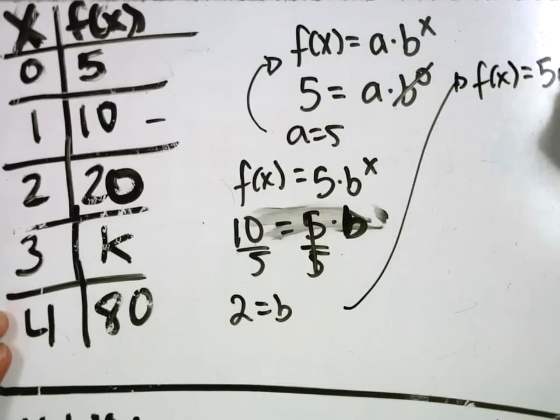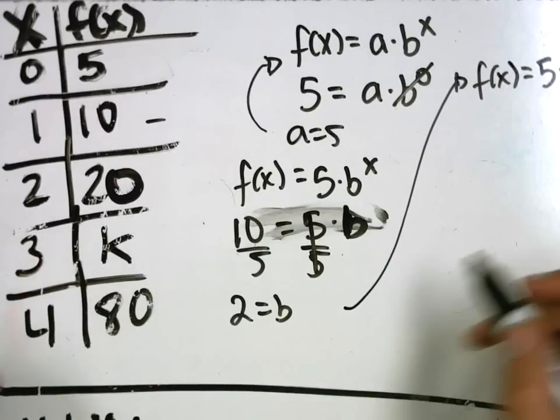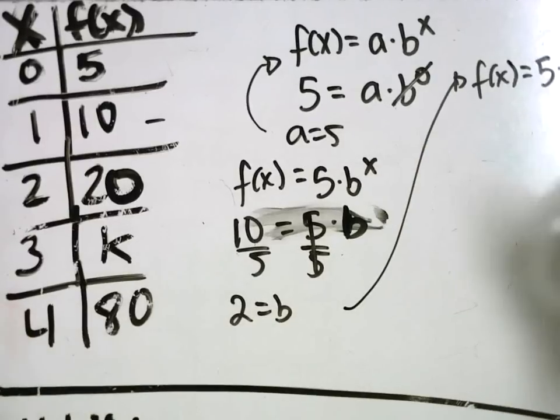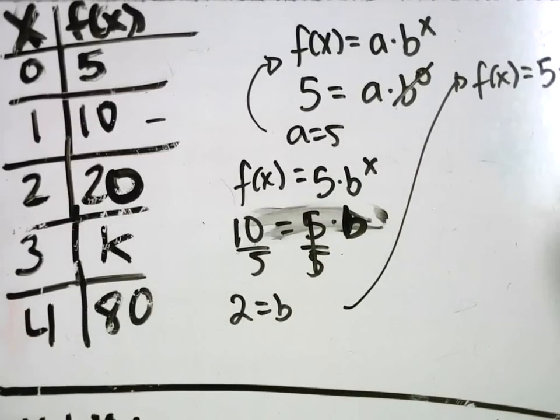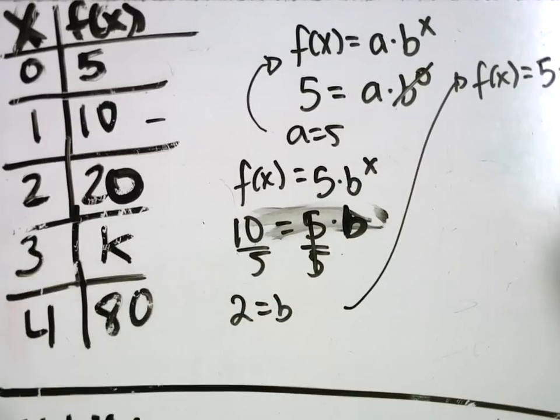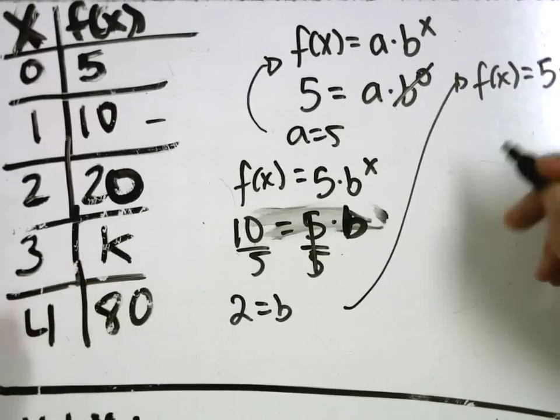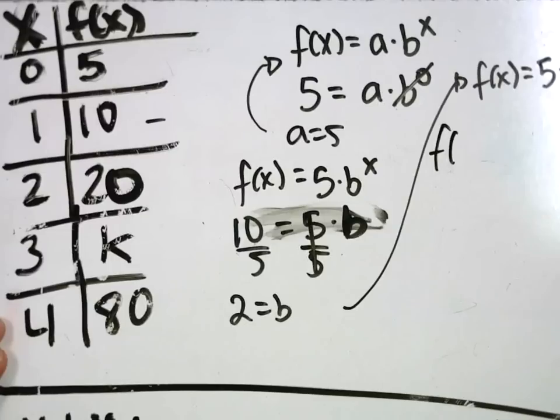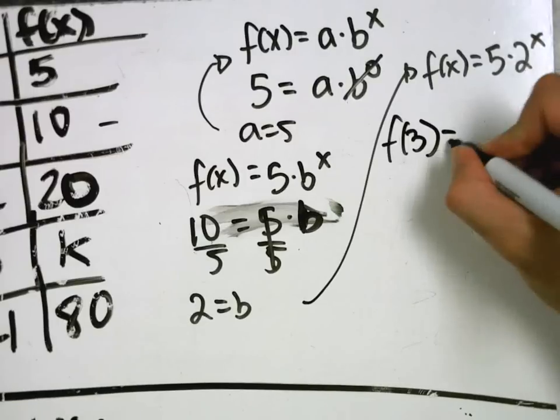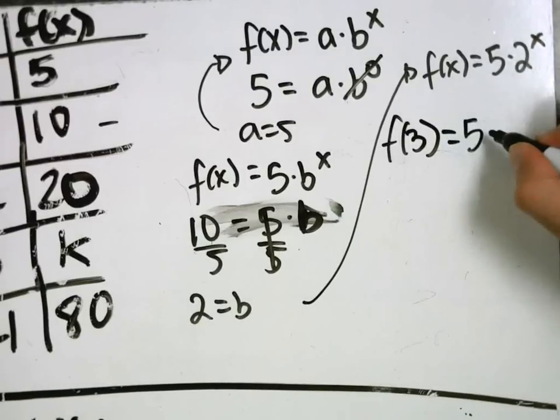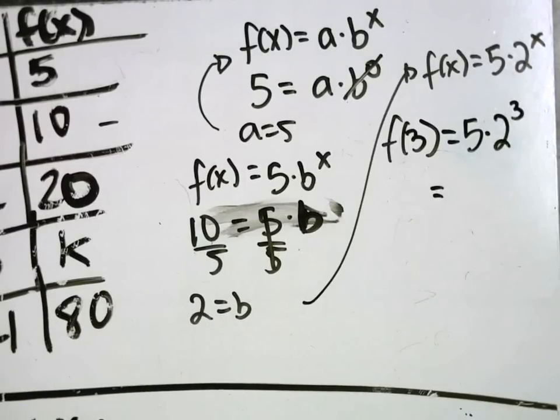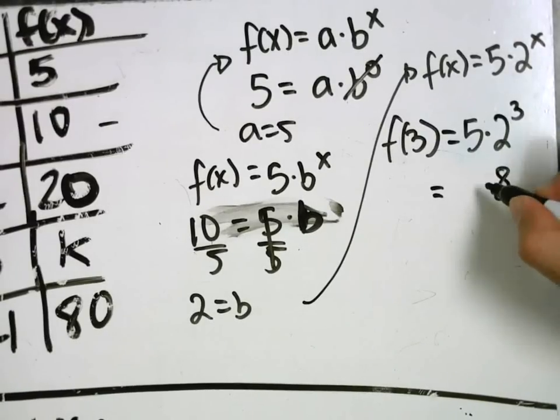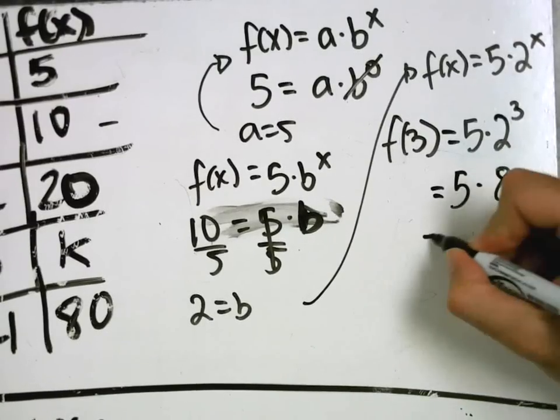How do I find K? That's the next step. So this was actually the exact same formula. The exact same work. Which is why I went through it a little faster. And now we've got to find K. K is the Y value for X equal to 3. So we'll plug in 3. F of 3 equals 5 times 2 to the 3. 2 to the 3 is 2 times 2 times 2, so 8. 5 times 8, 40. So K equals 40.